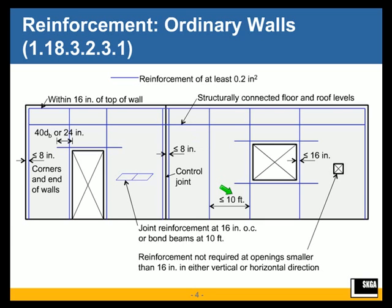This prescriptive reinforcement can be met by structural reinforcement. For example, if you were designing the lintel above a window opening and you needed a number 5 or number 6 bar, that also satisfies the prescriptive seismic reinforcement requirements. You don't have to put in additional reinforcement to meet that.